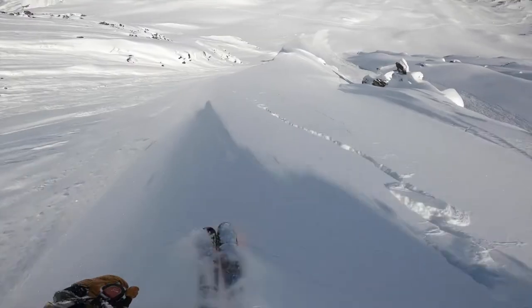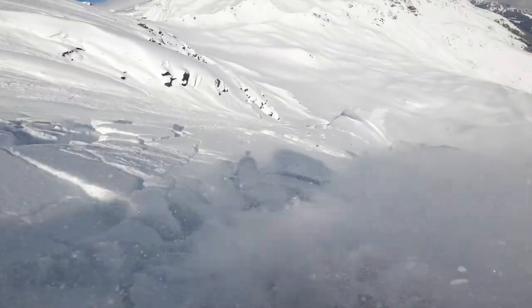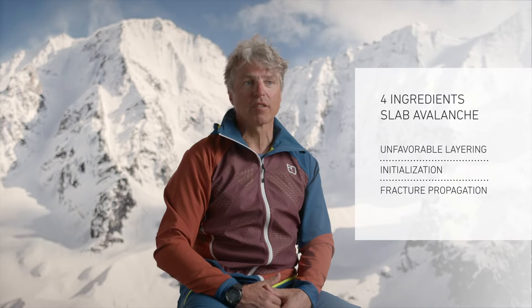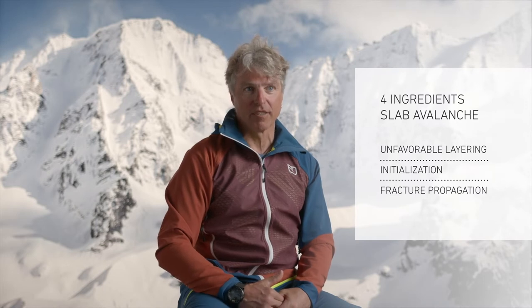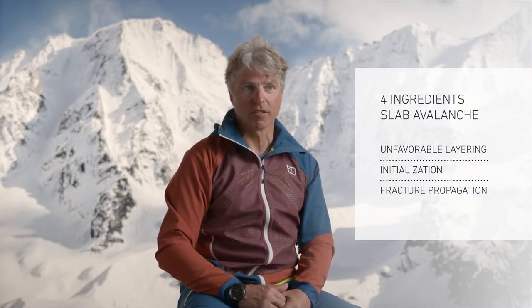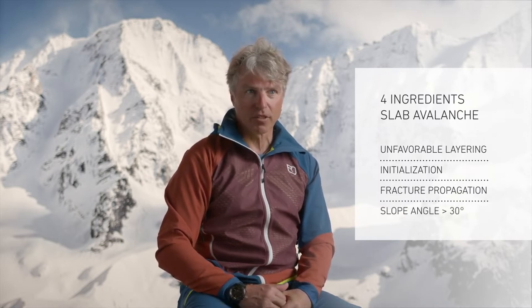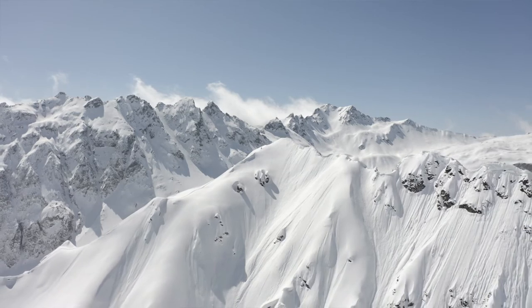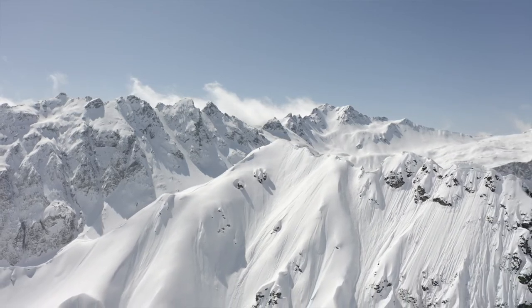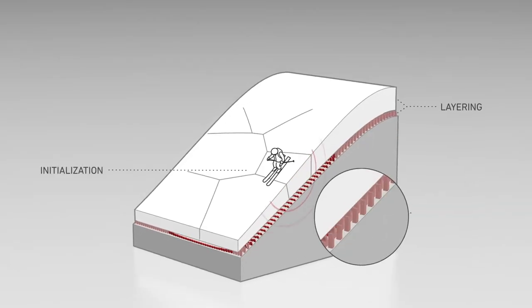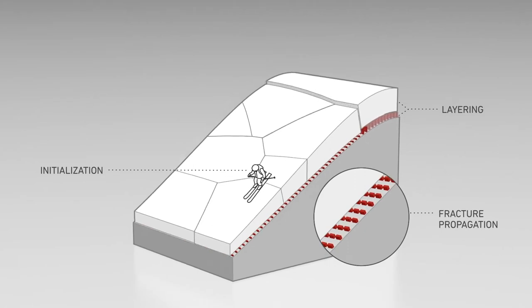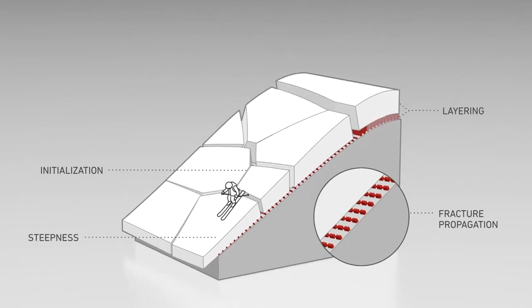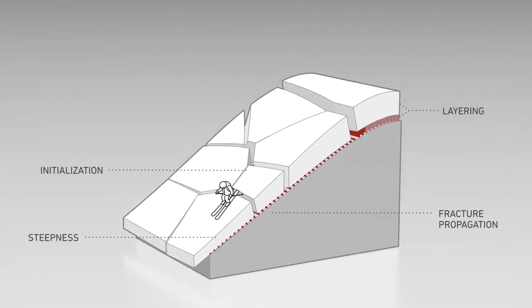This ability to propagate is a particularly characteristic indication or criterion for these snow slabs that is difficult to assess. And the last ingredient we need, the fourth one, is sufficient slope steepness. The snow will only start gliding on slopes of 30 degrees or steeper, and the average steepness for skier-triggered slab avalanches is 38 degrees.